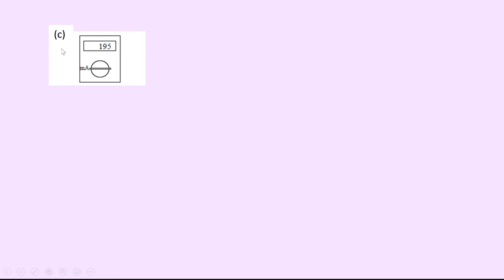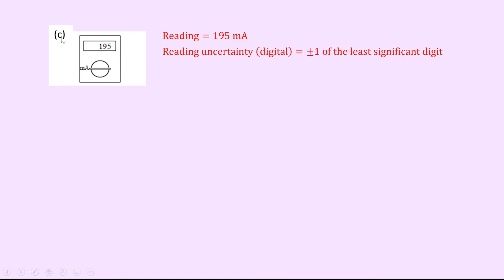In part c we have 195 on the screen with the dial set to milliamps, so the reading is 195 milliamps. The reading uncertainty in that digital scale is plus or minus one of the least significant digit, which is simply plus or minus 1 milliamp. Writing this in absolute form: 195 ± 1 mA.